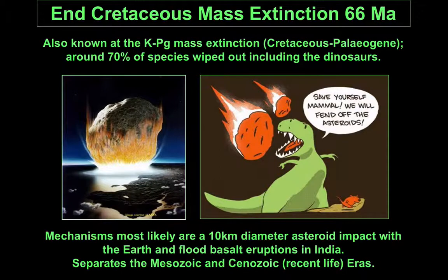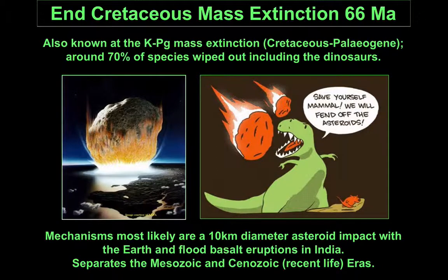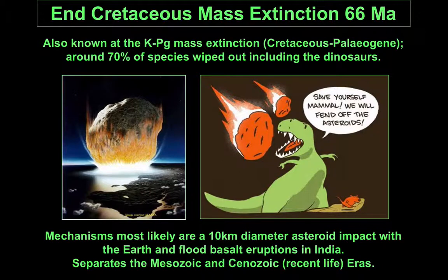The cause of this mass extinction has been the subject of much debate. We know there were very large flood basalt eruptions in what is now India, and at the same time a large meteorite struck what is now Mexico. We'll look in detail at the mechanism of this in another part of the course. This also marks the end of the Mesozoic era.